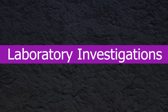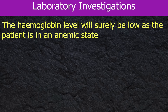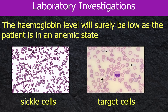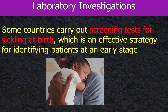For laboratory investigations, the hemoglobin level will surely be low as the patient is in an anemic state. The blood picture will show sickle cells and target cells. Howell-Jolly bodies, which are a feature of splenic atrophy, may also be evident in the blood smear. Some countries carry out screening tests for sickling at birth, which is an effective strategy for identifying patients at an early stage.